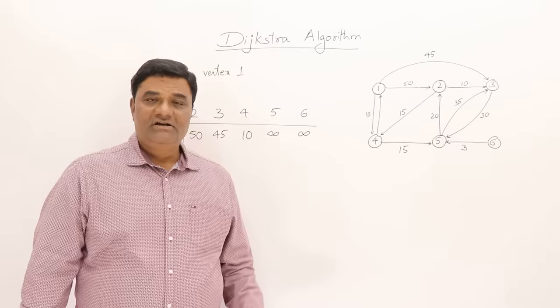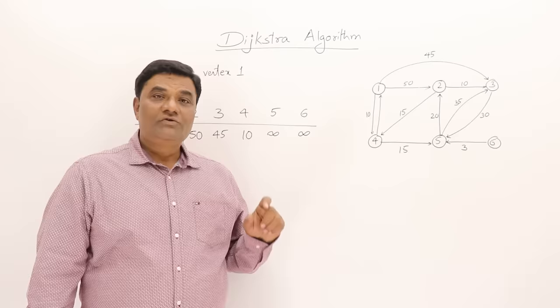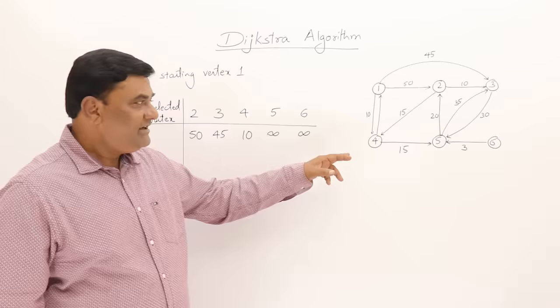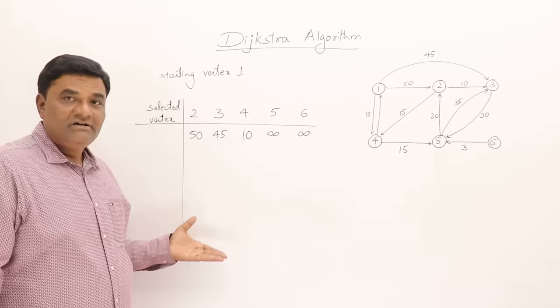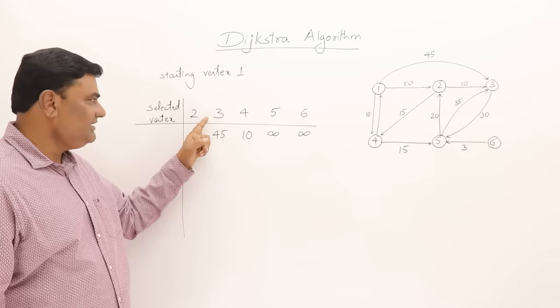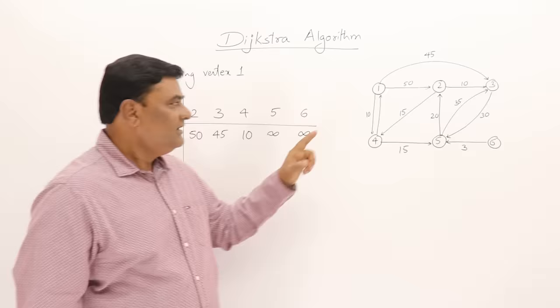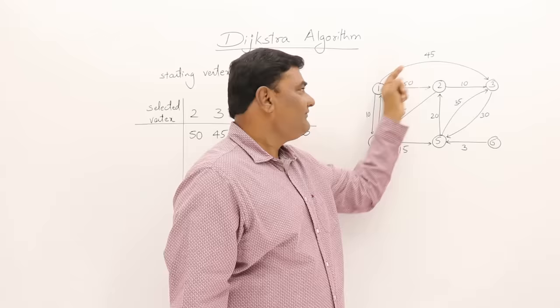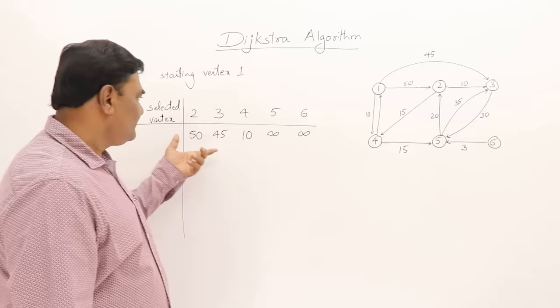Here I have a weighted directed graph commonly found in textbooks. On this we will run Dijkstra's algorithm to solve the single source shortest path problem. Instead of updating distances on the vertices, I will write them in a table. Initially I find the direct edge paths from vertex 1 to all vertices: to vertex 2 it is 50, to vertex 3 it is 45, to vertex 4 it is 10, to vertex 5 no edge so infinity, to vertex 6 no edge so infinity.